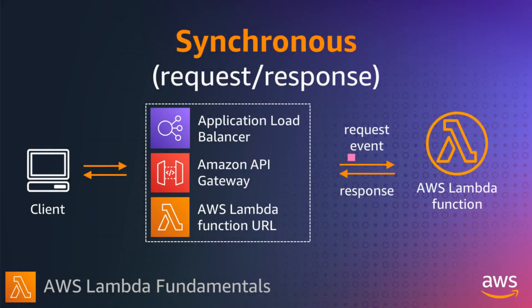When you invoke a function synchronously — either directly using the SDK or Lambda function URLs, or through a service like API Gateway — Lambda sends the request to the Lambda function which runs your code and waits for a response. When the function completes, Lambda returns the response to the client caller, also adding some additional data such as the version of the function that was invoked. When you invoke a function using the console, this is a synchronous invoke, and you can see the function response in the console output.